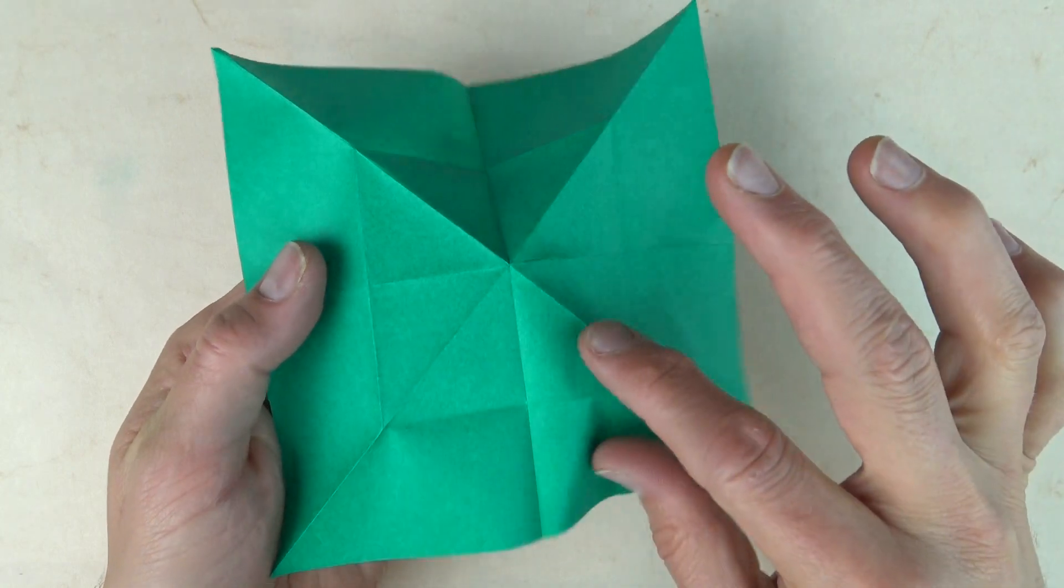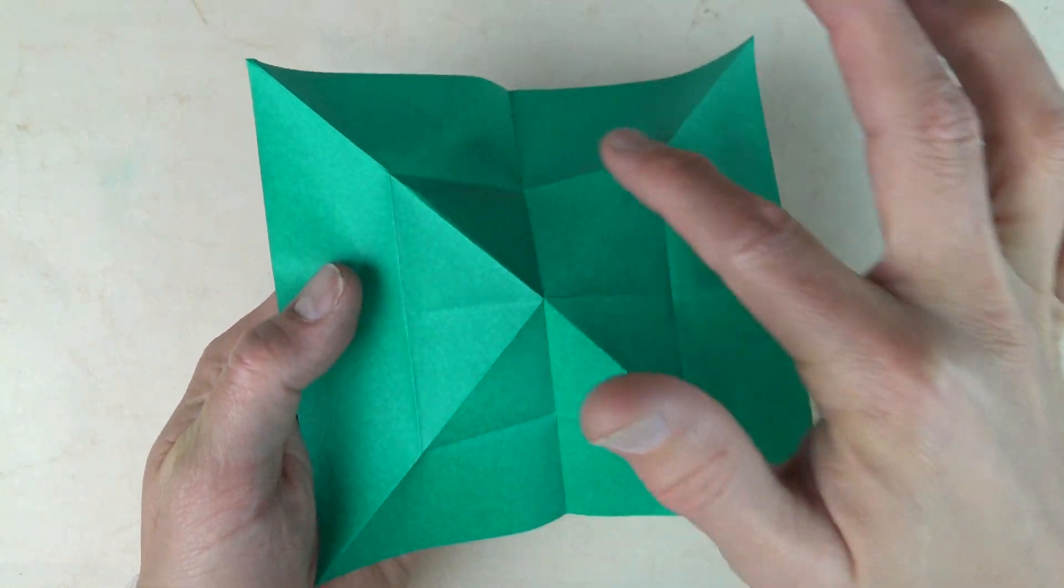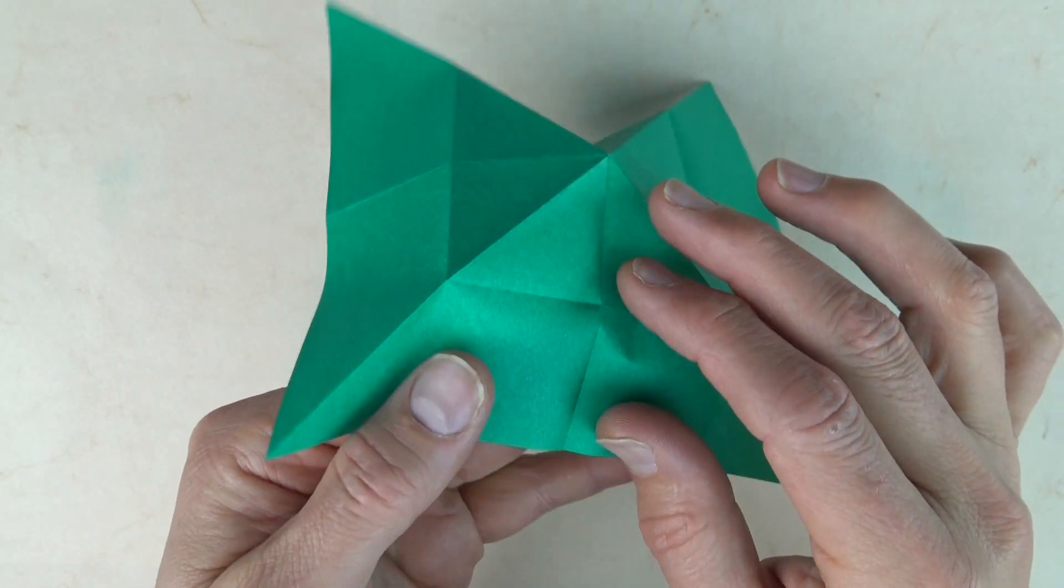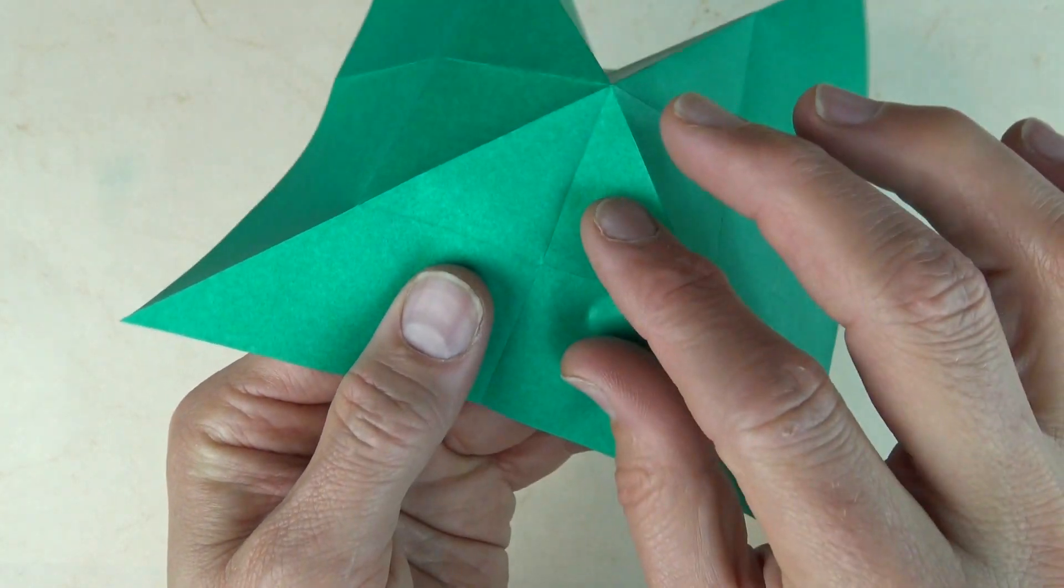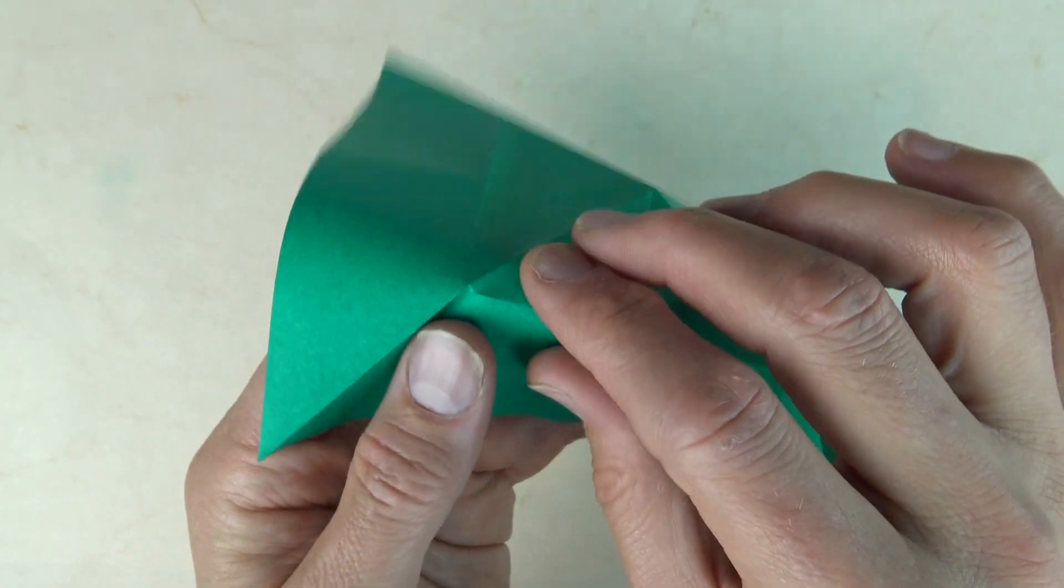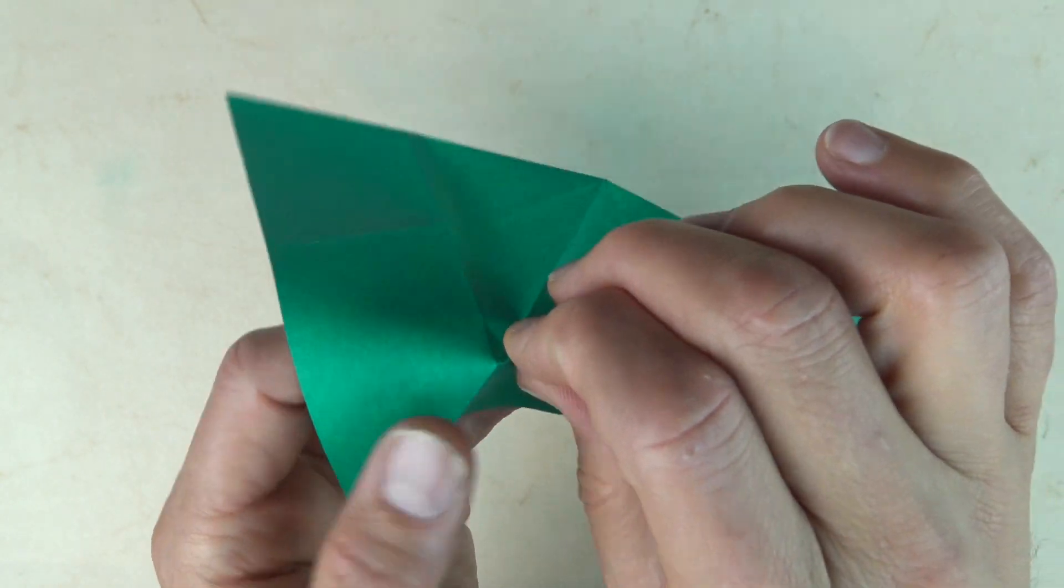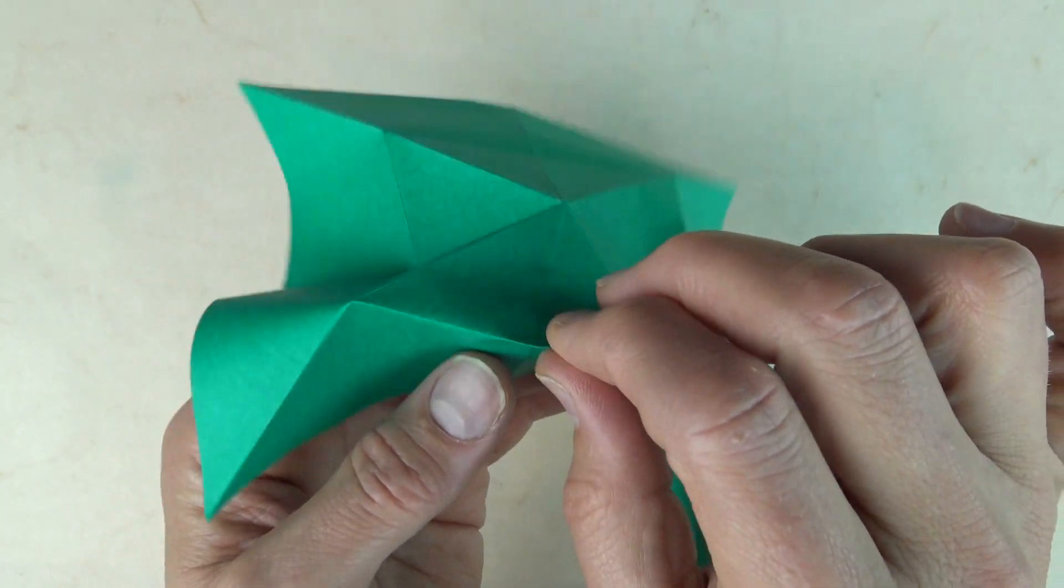And turn over. And now we're going to go around this square, pinching it. And it's good to have your finger behind to provide support. So pinch, pinch, pinch. And just travel around the square.